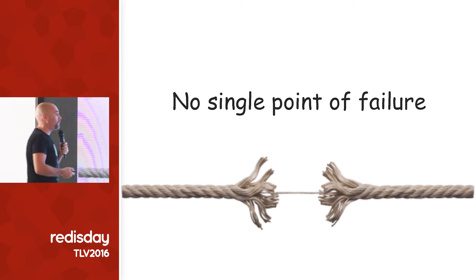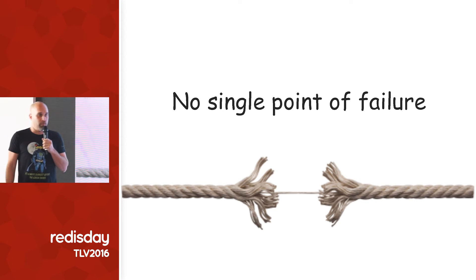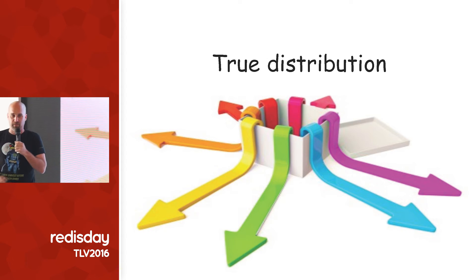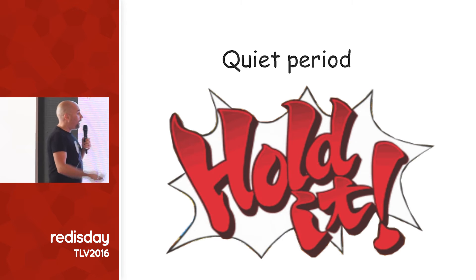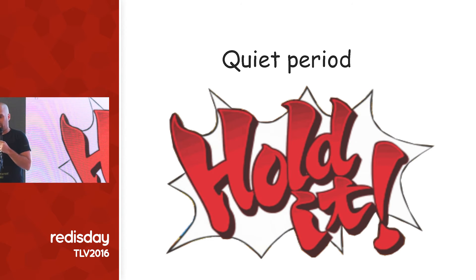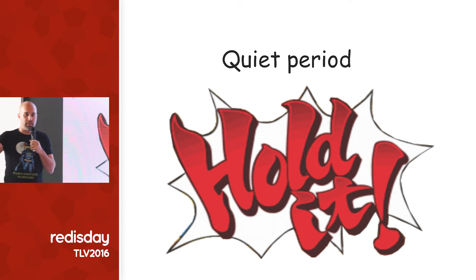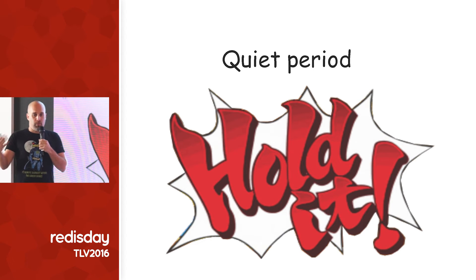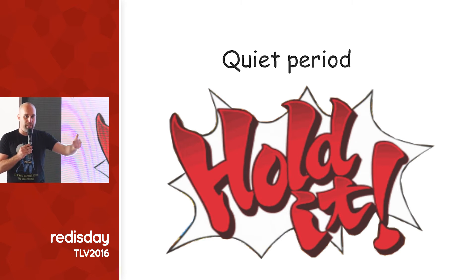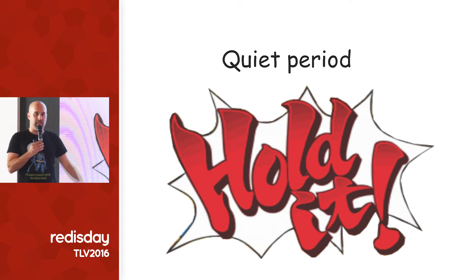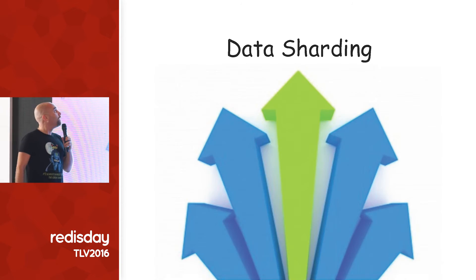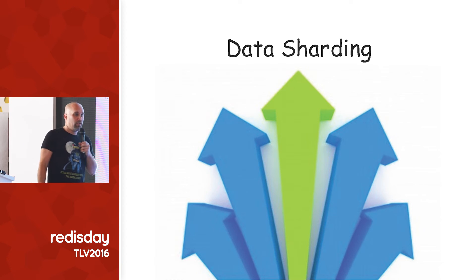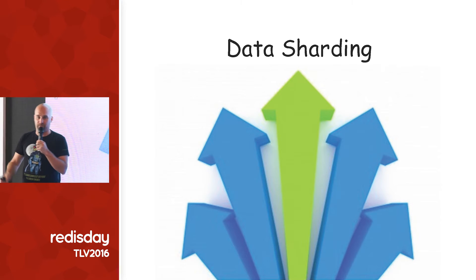The requirements for that middleware were: first, no single point of failure - we can't allow that. Second, we need load distribution - there's not much point having multiple microservices if you don't distribute the load among them. Third, we need quiet periods: if a user uploads six files and each one generates an index calculation, we want all six to happen together before starting the calculation. And finally, data sharding - a single microservice instance needs to handle all operations for a single user or resource.